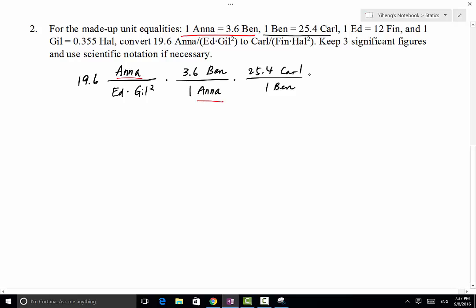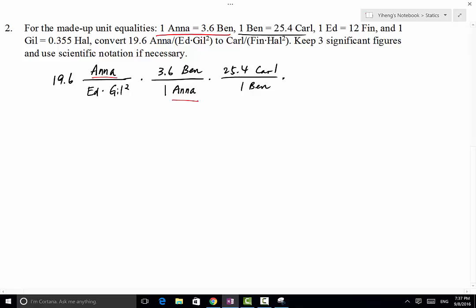And then the next thing we want to do is to convert between Ed and Fin because Ed here is on the denominator. Therefore when we write the coefficient from this equality, we want to write Ed to be on the top equals to 12 Fin that is on the denominator, so that Ed can be cancelled out.